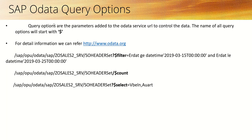Now we'll learn about SAP OData query options. Once we are familiar with the basic concept of OData service and how to develop an OData service and the implementation of CRUD operations in the runtime artifacts, the next important part is implementing query options. Query options are parameters added to the OData service URL when we are testing our OData service. Examples include filter, count, and select — those are called query options.